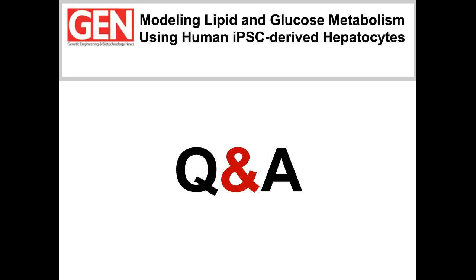I'll just add to Siobhan's answer: the 2.0 product was developed to help industrialize and scale up this differentiation process. Doing a little bit of extra culture time ahead of running the assay is really the main difference. All the data presented in the first half on glucose regulation was using the 2.0 version of the cells as well. Siobhan had actually run the initial part of assay development with both cell types and got very similar results.